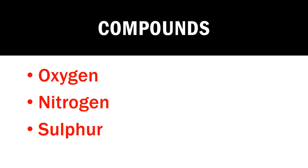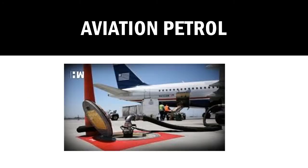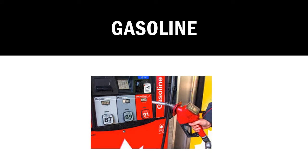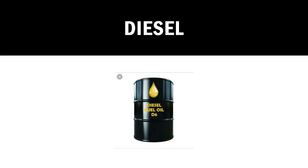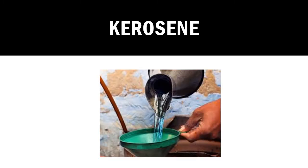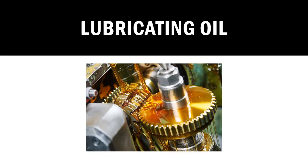Petroleum is used to obtain aviation petrol — you can see a plane being filled with petrol, and that petrol is obtained from petroleum. Gasoline, which we put in our cars, is also obtained from petroleum. Diesel and kerosene are also obtained from petroleum.